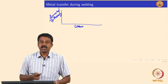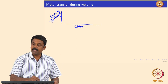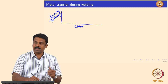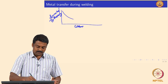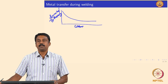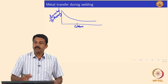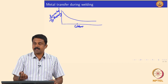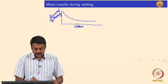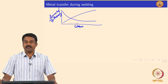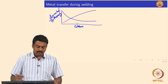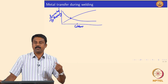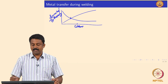At lower current, gravity is the major rate-controlling force, so you need to generate enough mass, meaning the droplet diameter is larger. As current increases, the diameter decreases. Upon a certain current, transfer goes from globular to spray, and the transfer frequency also increases as a function of current. The current at which transition from globular or ripple globular to spray occurs is known as the spray transition current.